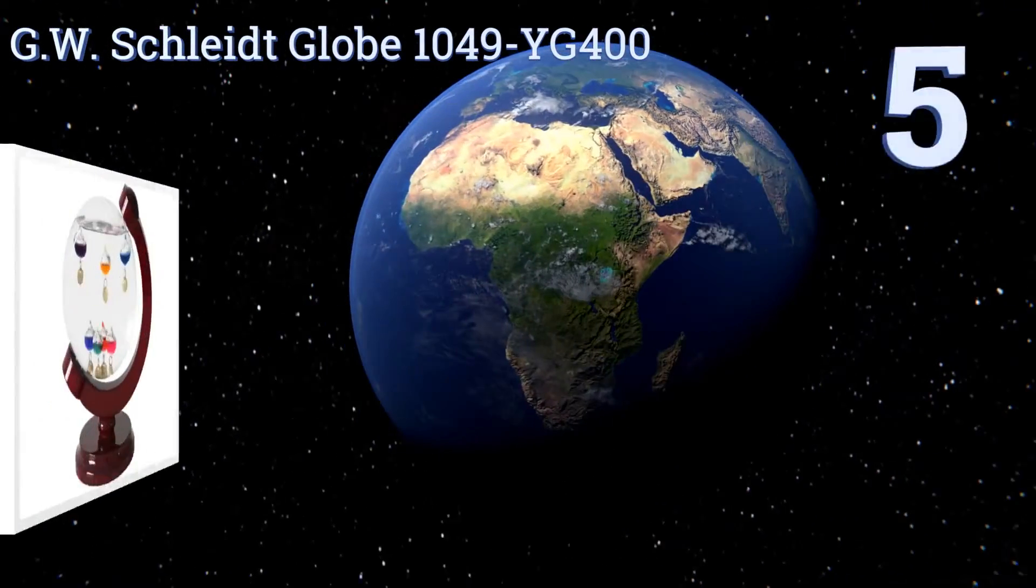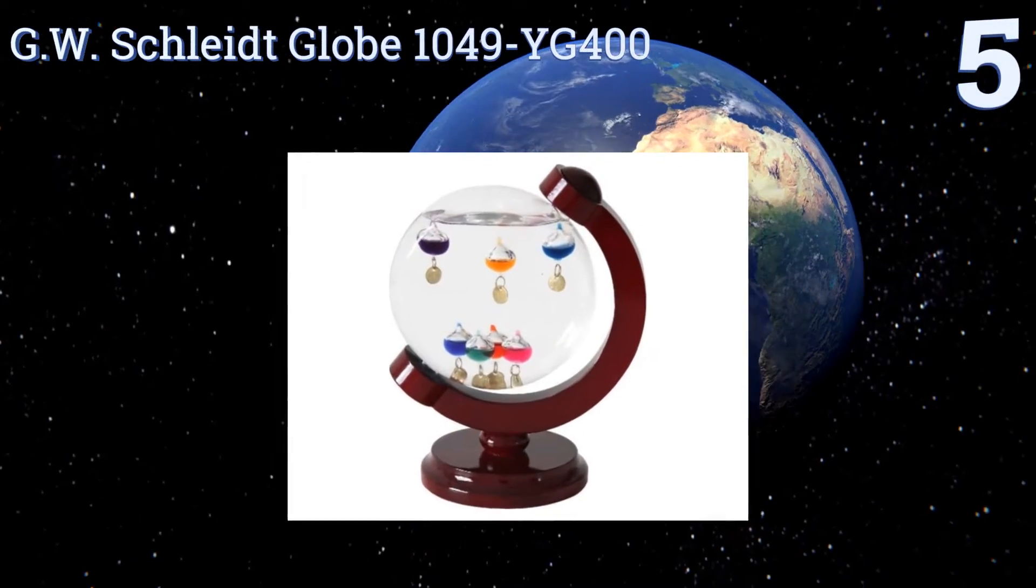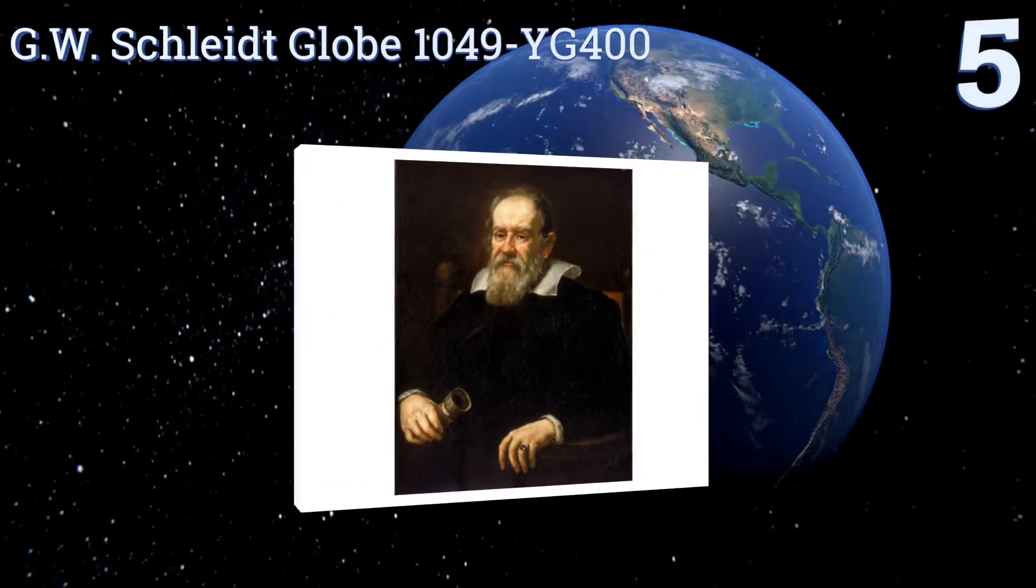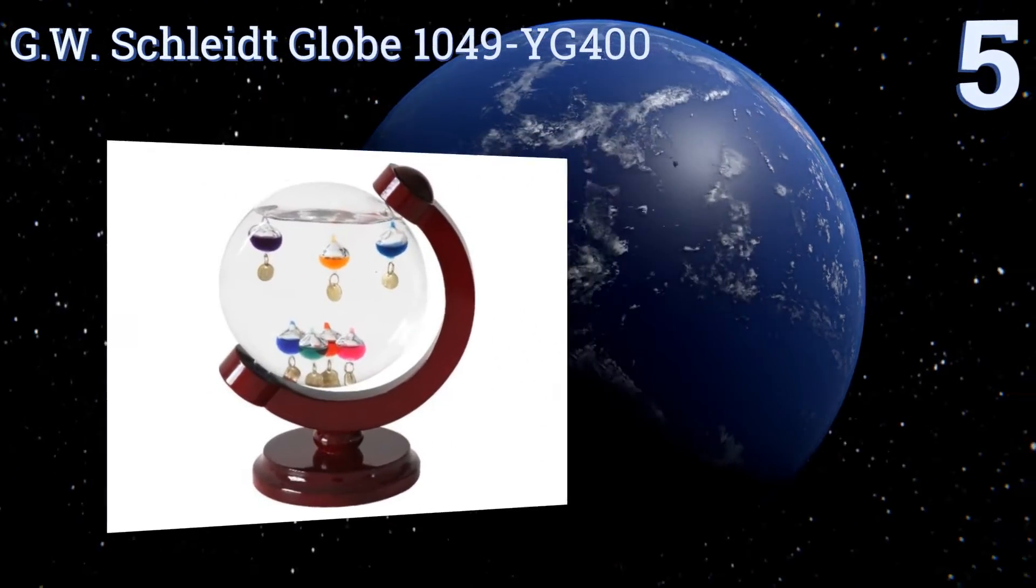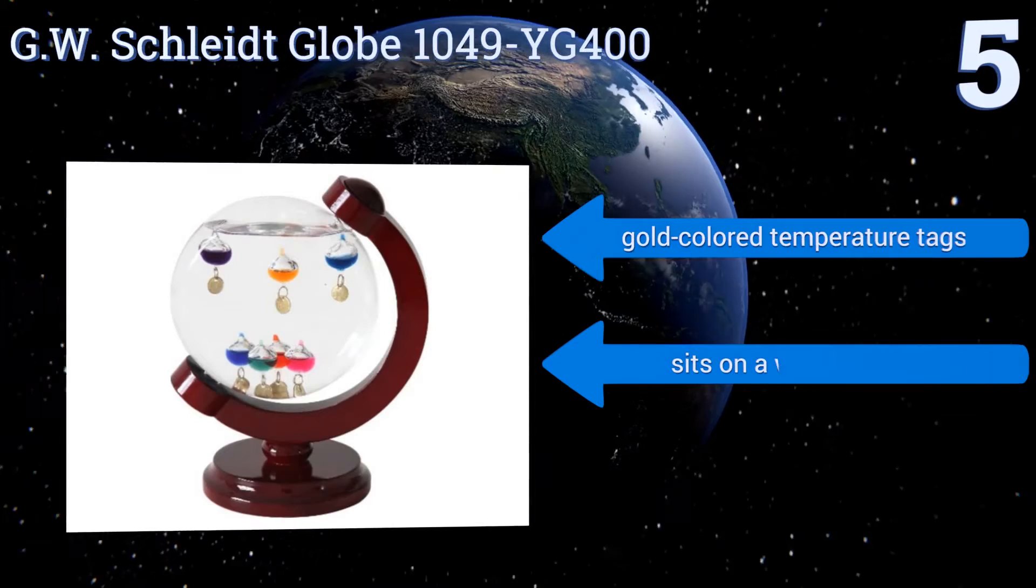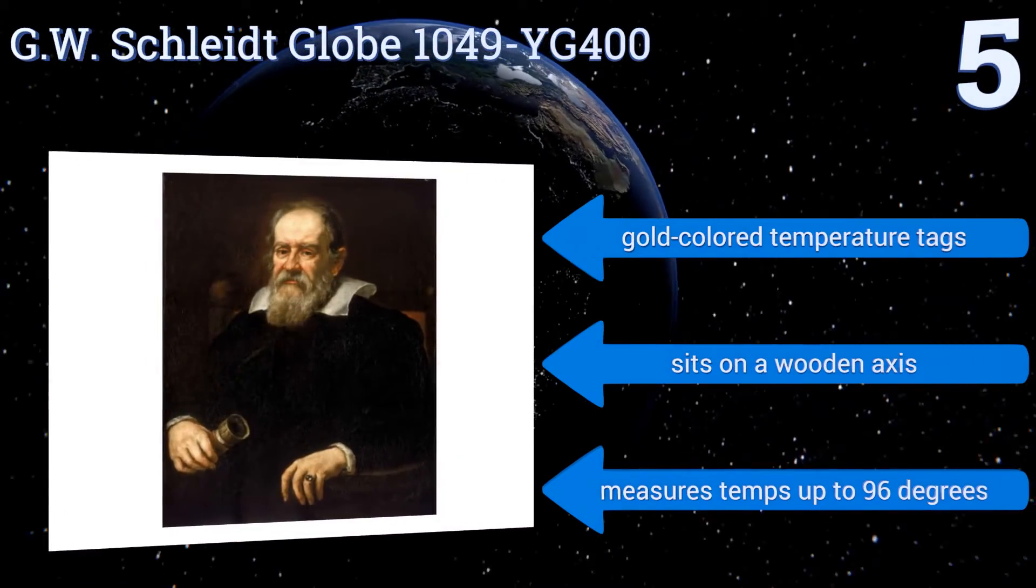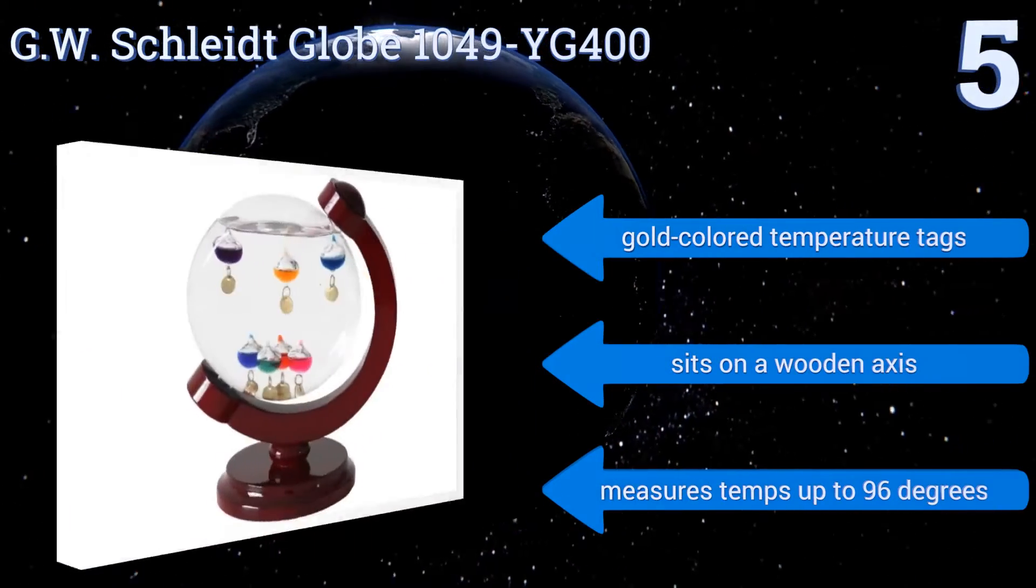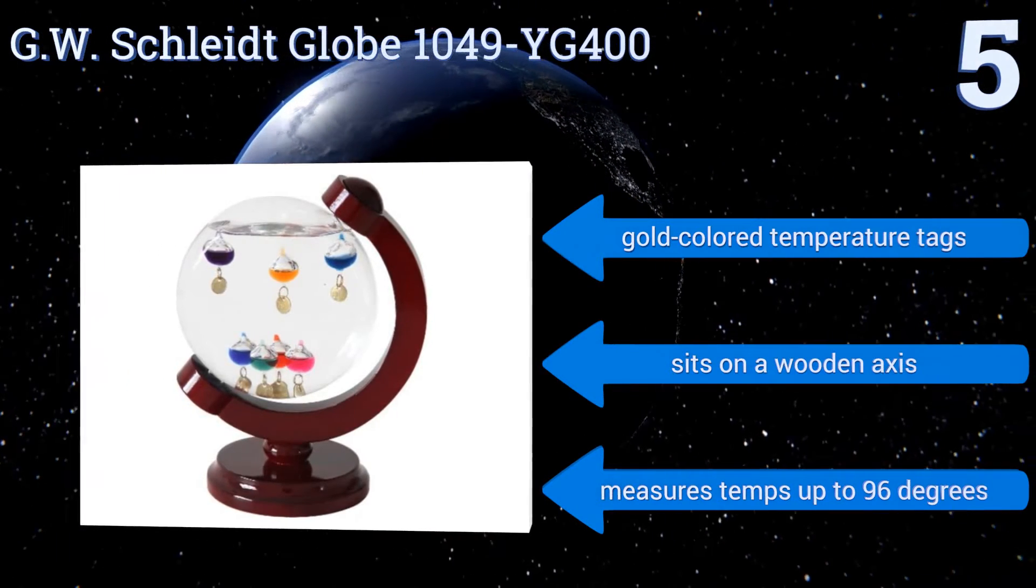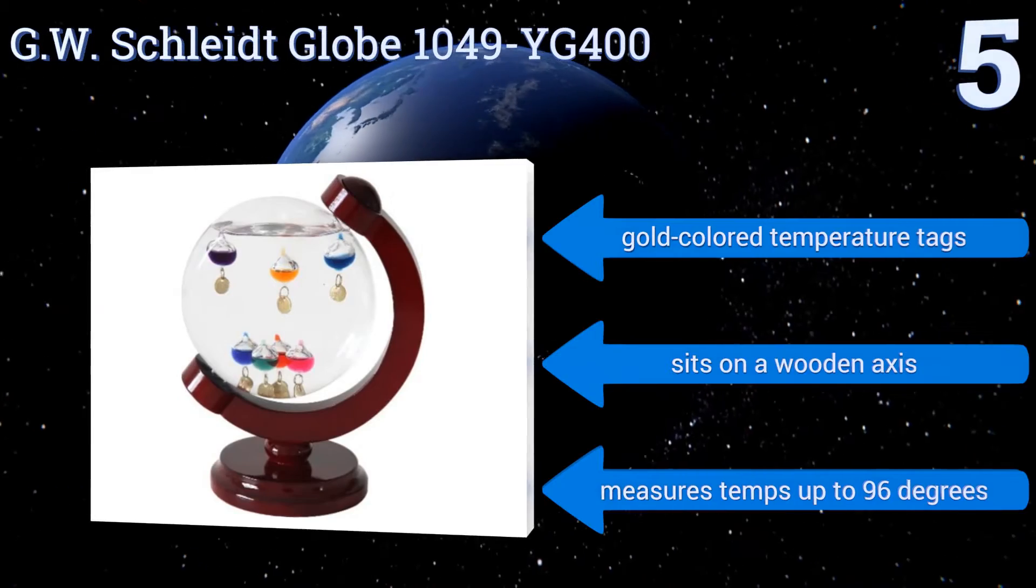At number 5, the round design of the GW Schleidt Globe 1049-YG400 allows it to serve as an accurate temperature measuring device while occupying minimal space. It stands just 8 inches in height and measures only 7 inches across, but it's sure to start many conversations. It comes with gold-colored temperature tags and sits on a wooden axis. It measures temperatures up to 96 degrees.